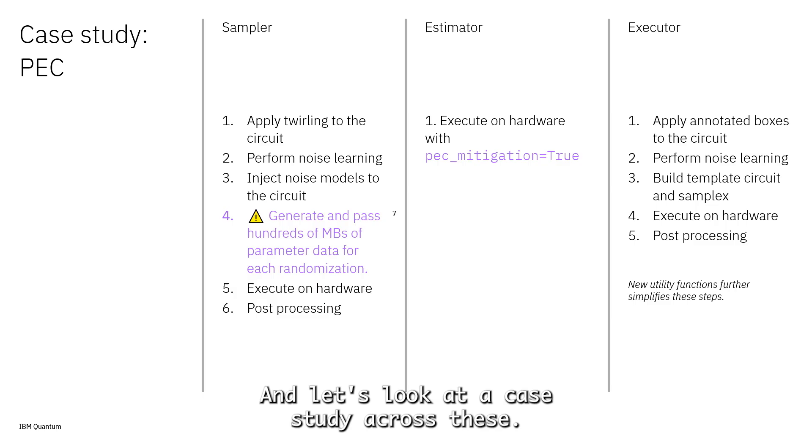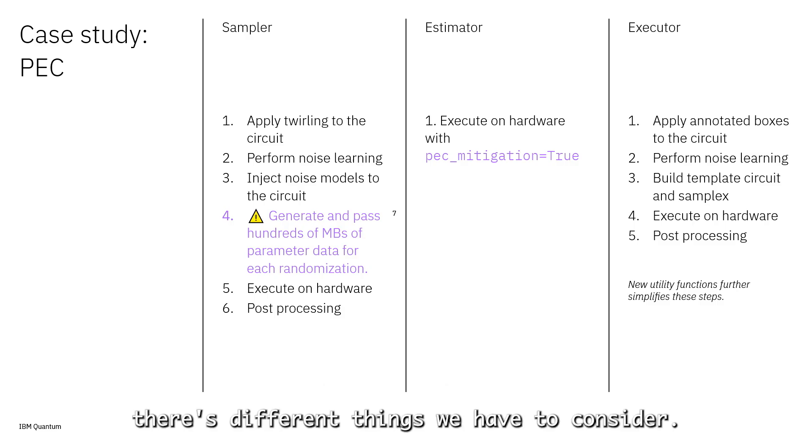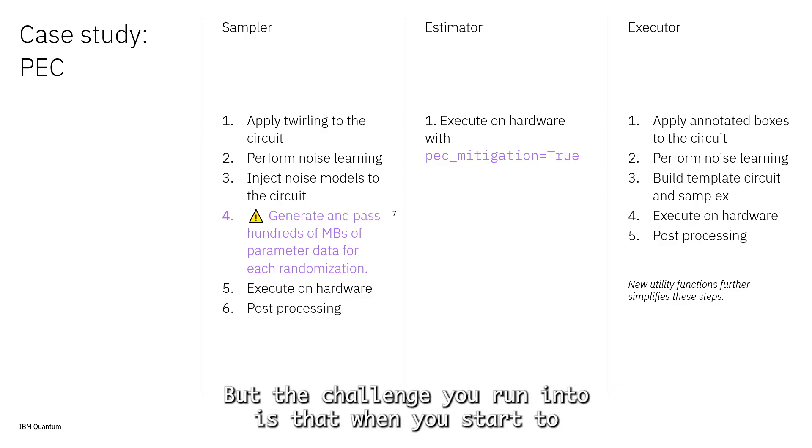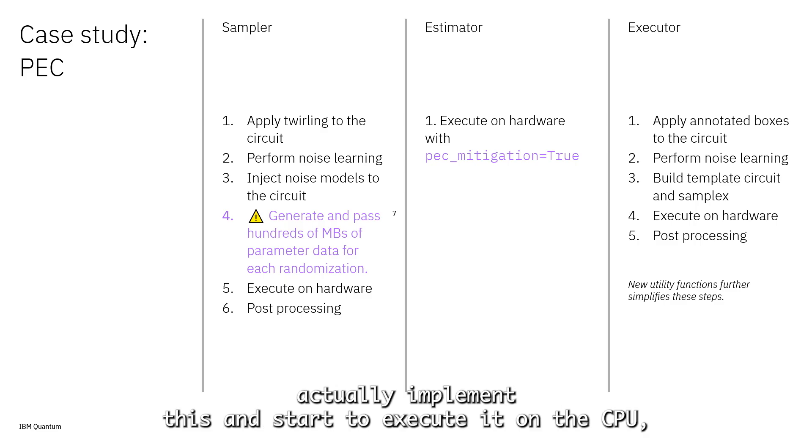Let's look at a case study across these. When we look at PEC, which is naturally focused on allowing you to scale workloads where you're trying to estimate observables, if you try to do this through the sampler you could build an end-to-end pipeline, but a challenge you run into is that when you start to execute it on the QPU, you start to have this expansion of data—it starts to expand to hundreds of megabytes, and that becomes untenable.